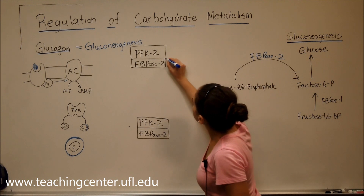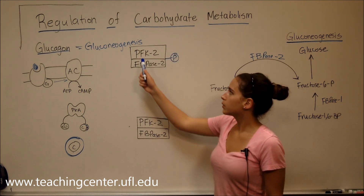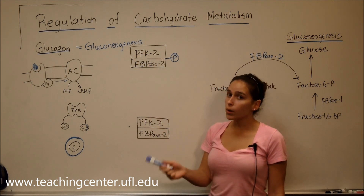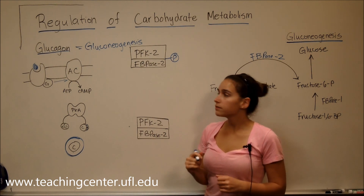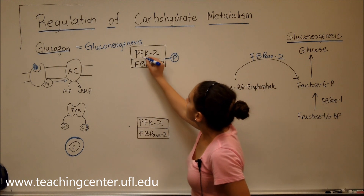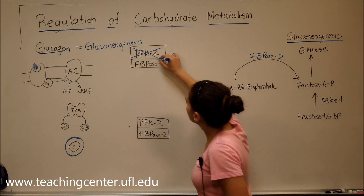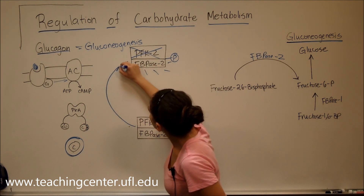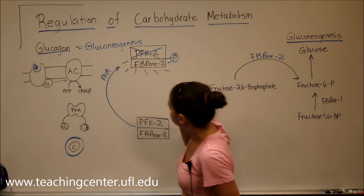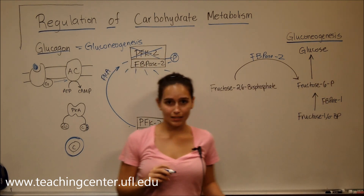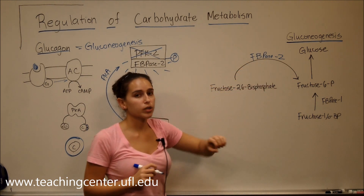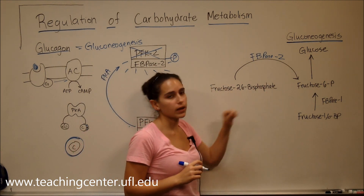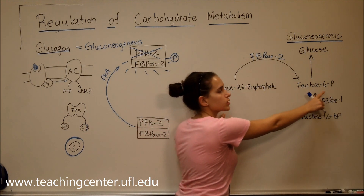PKA is going to phosphorylate the bifunctional enzyme containing phosphofructokinase 2 and fructose bisphosphatase 2. After phosphorylation, one part of the enzyme becomes inactive and one becomes active. The inactive part is phosphofructokinase 2, and the active part is fructose bisphosphatase 2. Once active, fructose bisphosphatase 2 removes the phosphate on the second carbon of fructose 2,6-bisphosphate, converting it to fructose 6-phosphate.